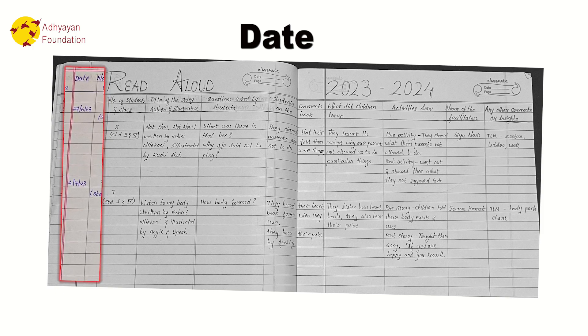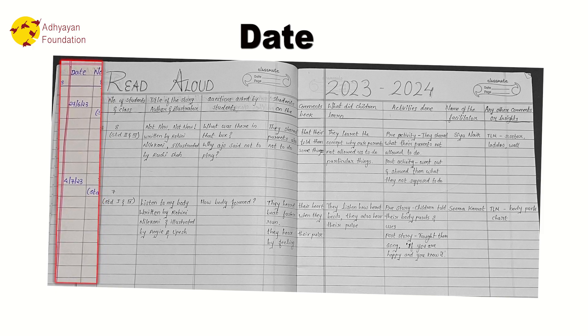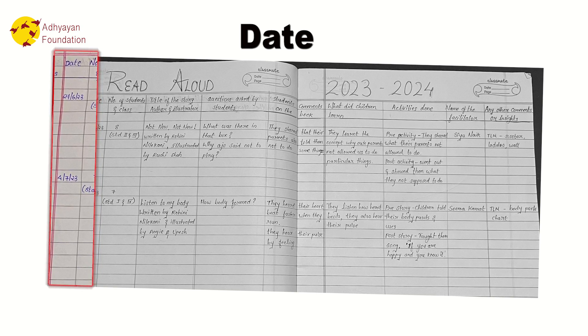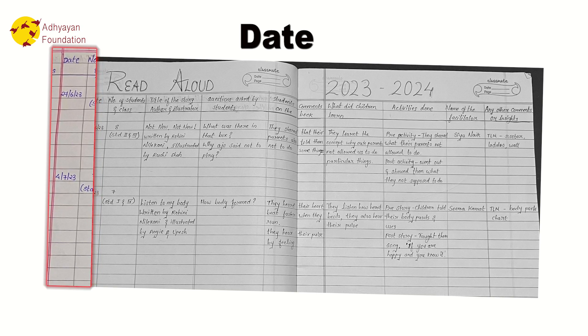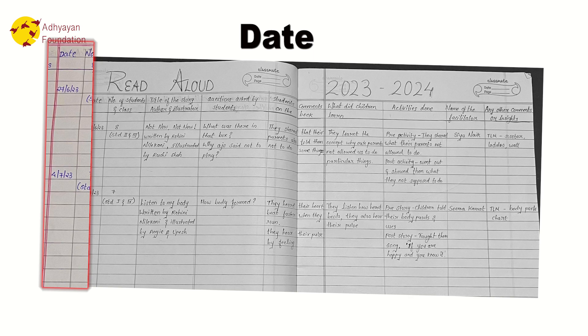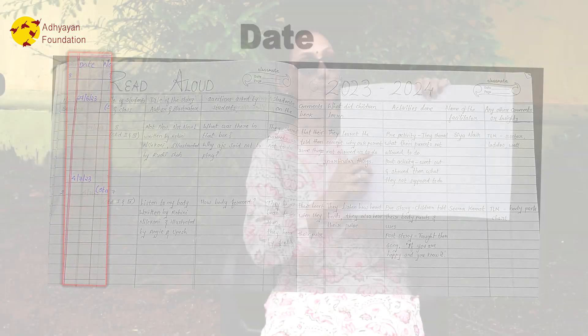Recording the date helps you track the books you have taken. You can revisit those books and also maintain the sessions in a chronological order.